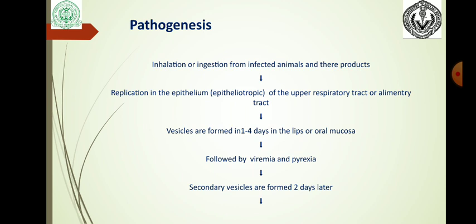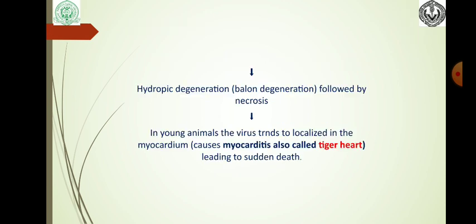Pathogenesis: The FMD virus is an epithelotropic virus. Entry of the virus is by inhalation or ingestion from infected animals and their products. Replication occurs in the epithelium of the upper respiratory tract or alimentary tract. Vesicles are formed in 1–4 days in the lips or oral mucosa, followed by viremia and pyrexia. Secondary vesicles are formed 2 days later. Hydropic degeneration or balloon degeneration is followed by necrosis. In young animals, the virus tends to localize in the myocardium, causing myocarditis (tiger heart), leading to sudden death.